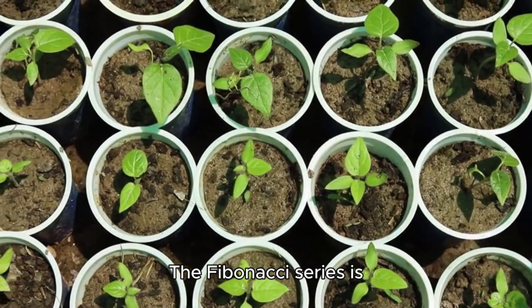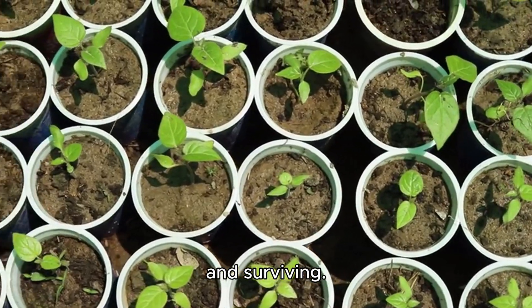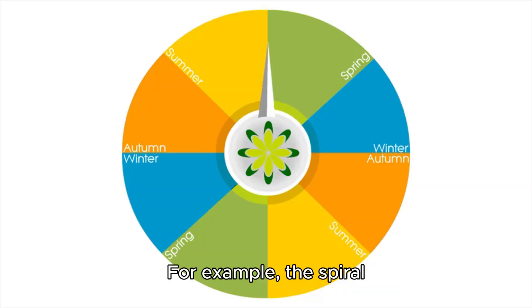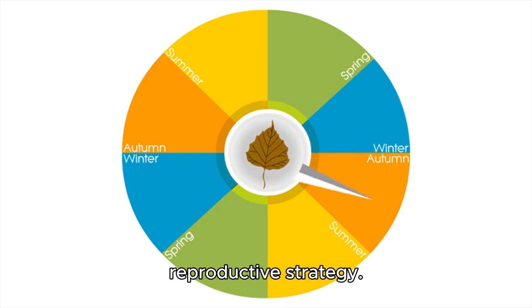The Fibonacci series is efficient and optimal for packing, growing, and surviving. For example, the spiral arrangement of seeds or leaves allows for maximum exposure to sunlight and rain, and the Fibonacci numbers in animal populations allow for the best reproductive strategy.